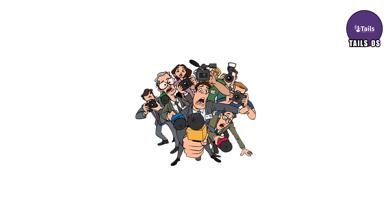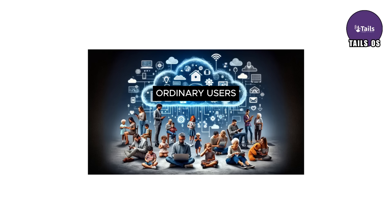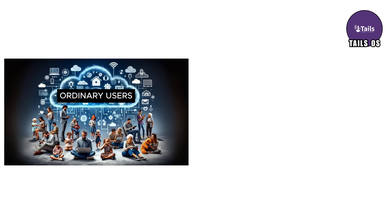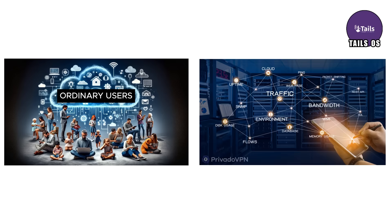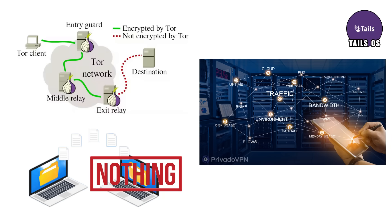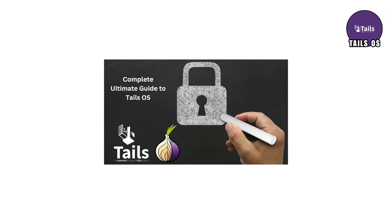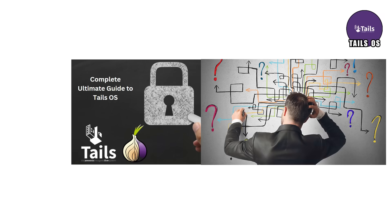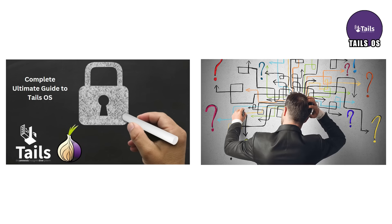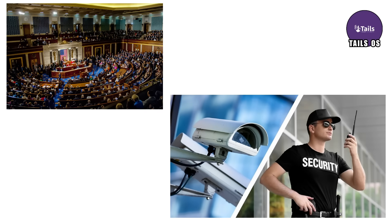Journalists, whistleblowers, privacy advocates, and ordinary users rely on it because it pipes all network traffic through Tor and stores nothing on your device unless you specifically ask it to. But this level of privacy becomes a problem the moment a government prefers surveillance over security.